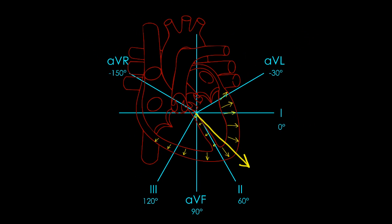Notice that the normal QRS axis is not oriented straight down the middle, but instead points more towards the left side. This is for a couple of reasons: number one, because the heart is oriented a little bit more leftward in the chest, and number two, because the forces of left ventricular depolarization are much greater than the forces of right-sided depolarization, simply because the left ventricular mass is so much more.